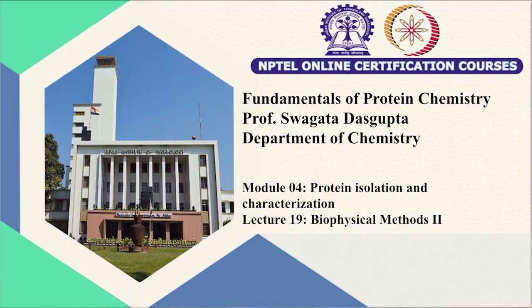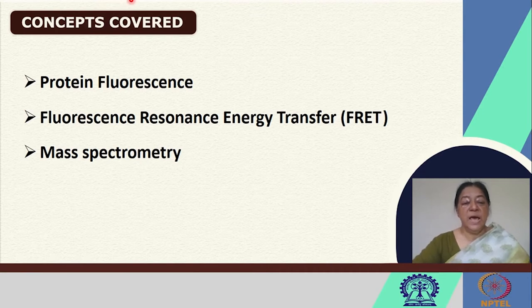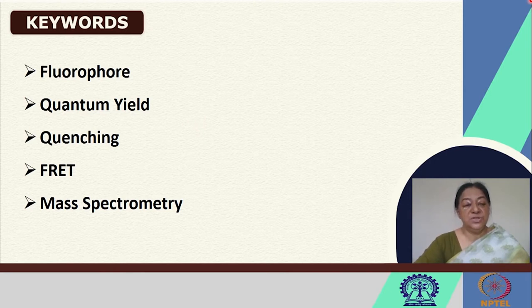We will continue our discussion on biophysical methods. In the last class, we learned about UV spectroscopy, IR, and a bit about circular dichroism. In this class, we will look at protein fluorescence, fluorescence resonance energy transfer, and mass spectrometry. The specific ideas we will cover are what fluorophores are, what we mean by quenching, what we mean by fluorescence resonance energy transfer, and how that can help us in estimating protein folded and unfolded content, as well as protein-ligand binding.